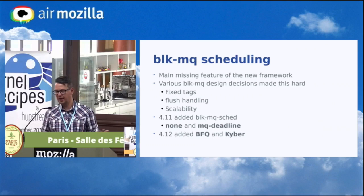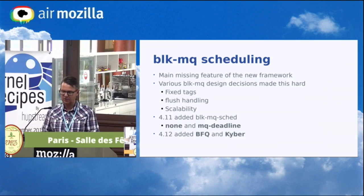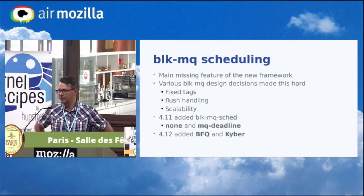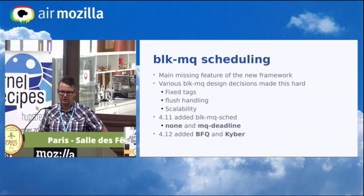Initially we shipped a 'none' scheduler — basically the old FIFO behavior — and MQ deadline, which is a conversion of the old deadline scheduler within MQ, still single-queue design but working within the new framework. For 4.12 we added BFQ and Kyber. BFQ has been around for years on the legacy side; it's basically a revamped improved design of CFQ, providing fair bandwidth, good latency, and interactivity for desktop users. Kyber is a fully multi-queue-aware design, mostly used on NVMe, supporting reader vs. writer fairness and so forth.